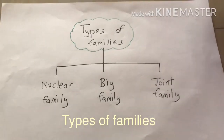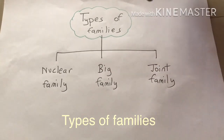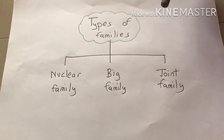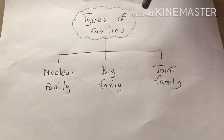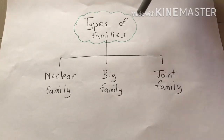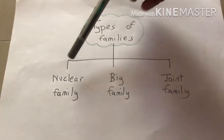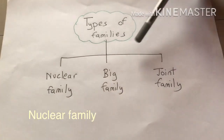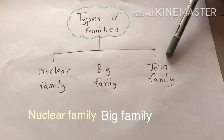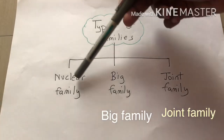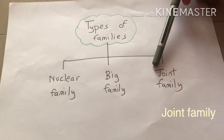Now, we are going to see about the types of families. We already learnt that the members of a family are related to each other and they support each other. So, now let us look at the types of families. They are nuclear family, big family, and joint family.